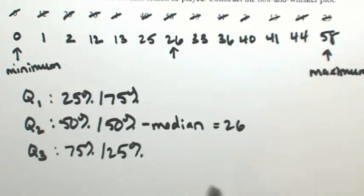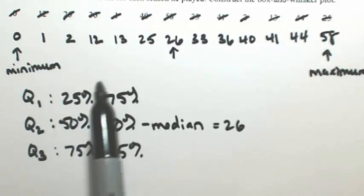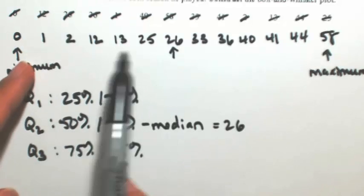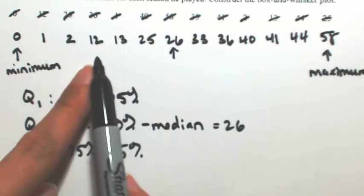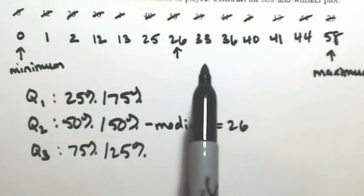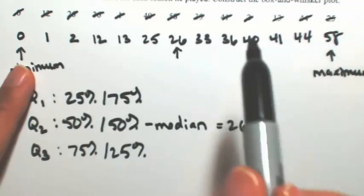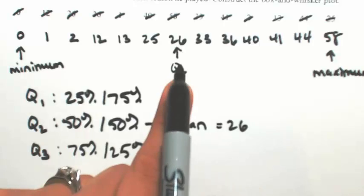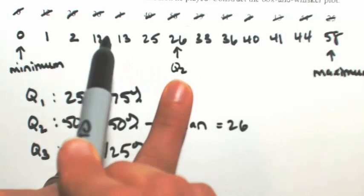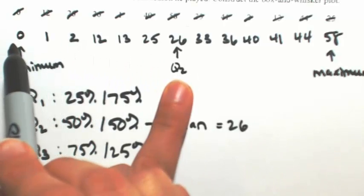So to find Q1 and Q3, we want to go basically half between the minimum value and the median because that's going to separate 25% from 75%. So between the minimum and Q2, Q2 is 26, so that means I have 1, 2, 3, 4, 5, 6 numbers to the left. So what I'm going to do is find the median of these 6 numbers to the left.